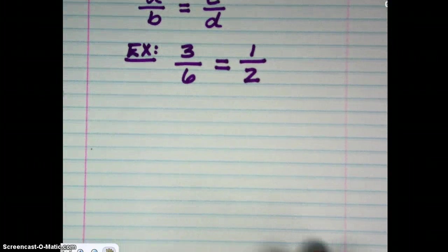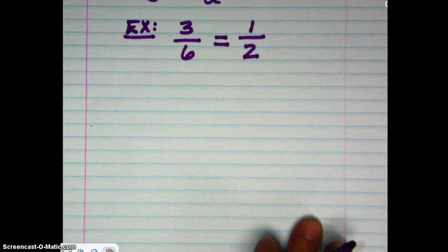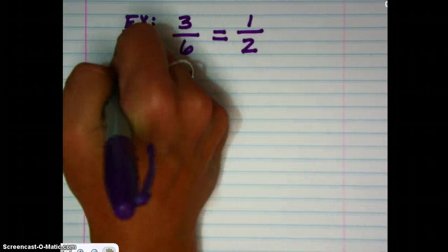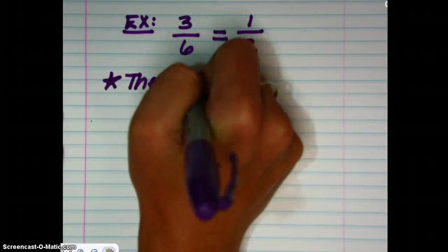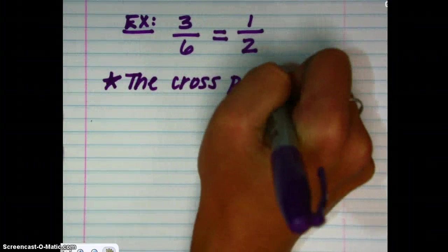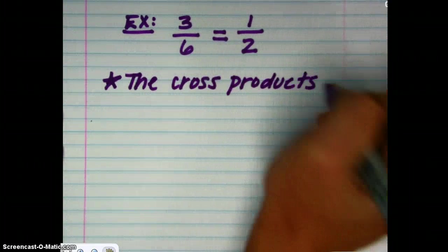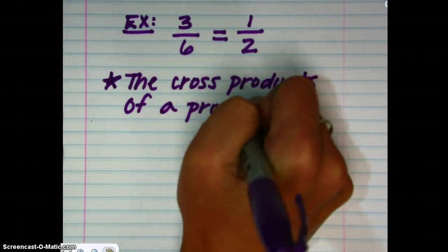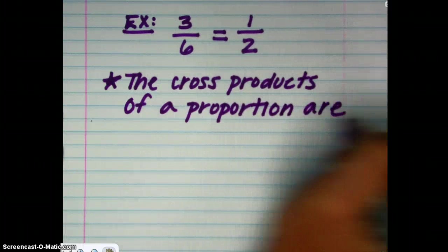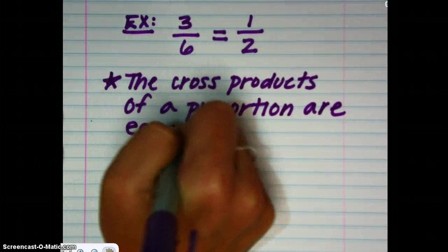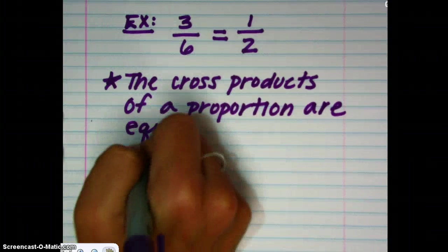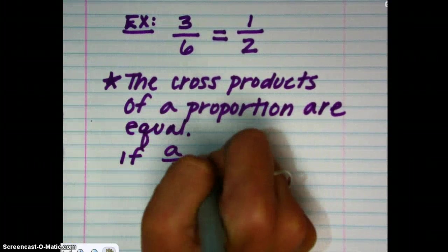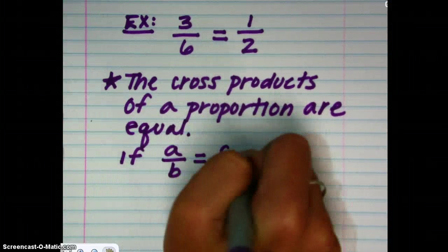In this section, we're going to talk about solving proportions using cross products. The idea here is that the cross products of a proportion are equal. So, in general, if you have a proportion such that A to B is equivalent to C to D...